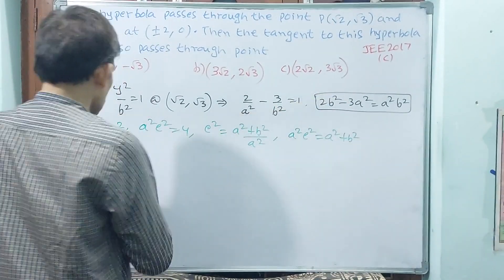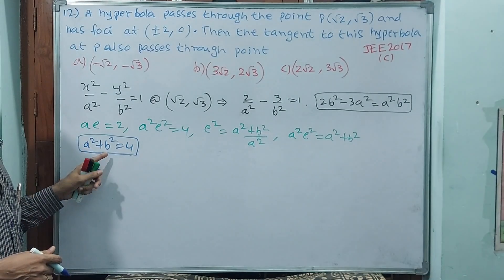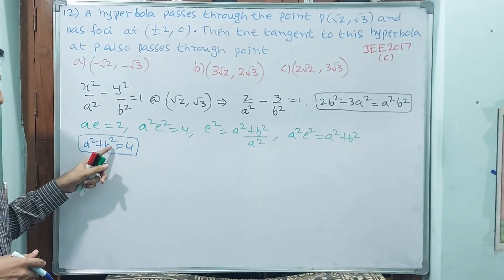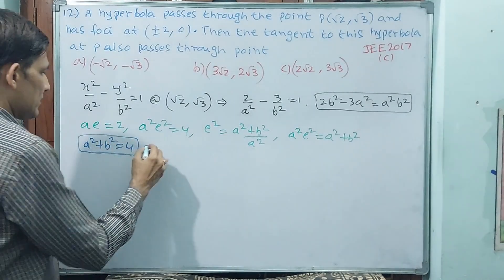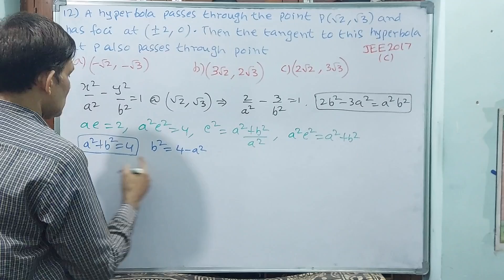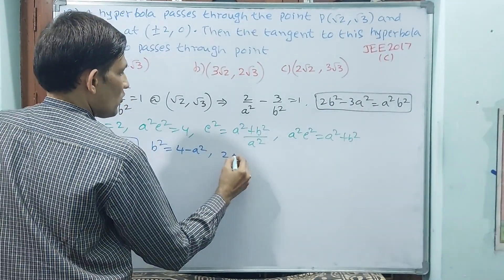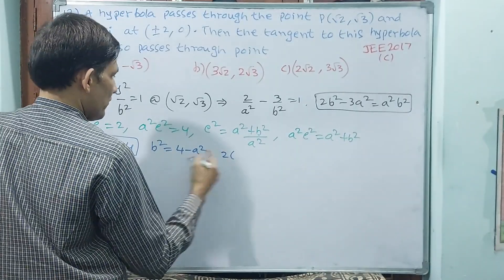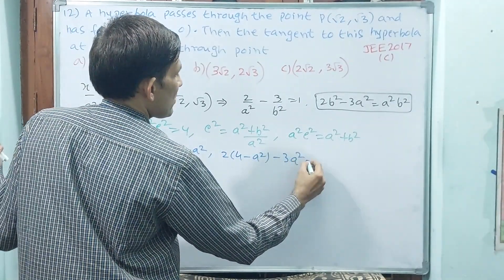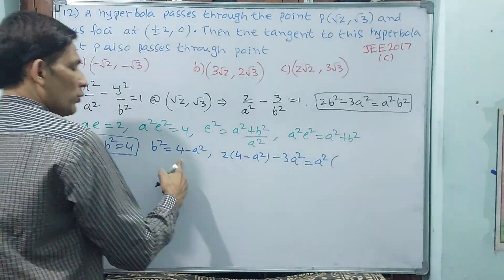We can solve this. Express b squared equals 4 minus a squared. Substituting into equation one: 2 times (4 minus a squared) minus 3a squared equals a squared times (4 minus a squared).